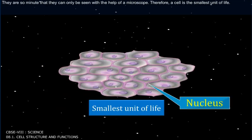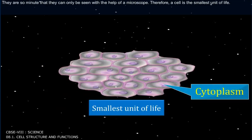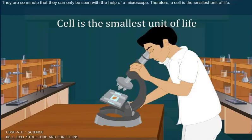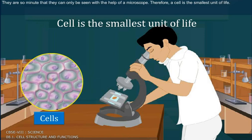They are so minute that they can only be seen with the help of a microscope. Therefore, a cell is the smallest unit of life.